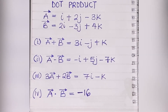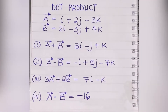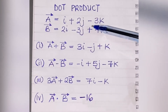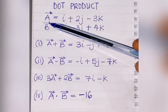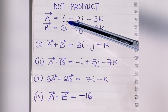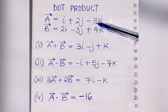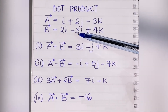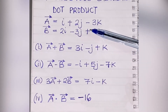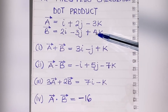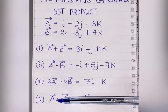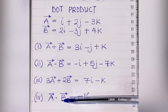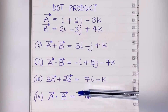We'll use the same vectors as before. Vector A is equal to i plus 2j minus 3k, and vector B is equal to 2i minus 3j plus 4k. The dot product A dot B is equal to minus 16.